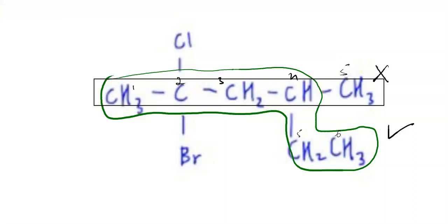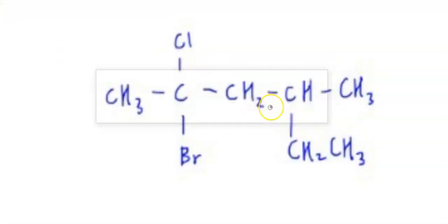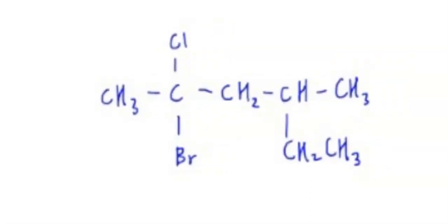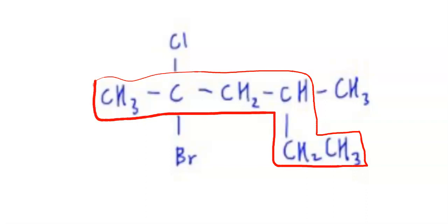So now we need to clear this and again, we need to think critically how to name this compound. Now, we have selected our chain and now we need to number. Now the question is, if this is our chain, which side to number?